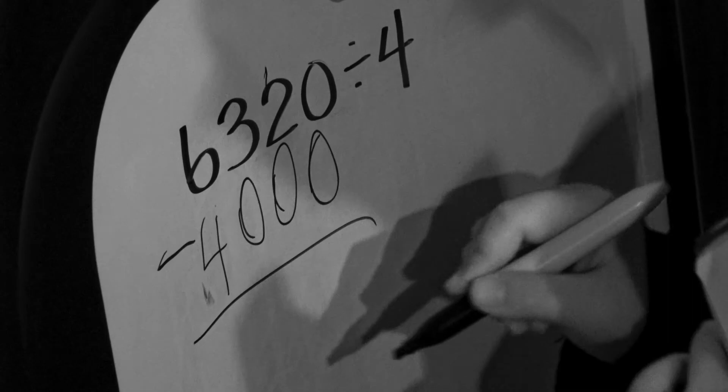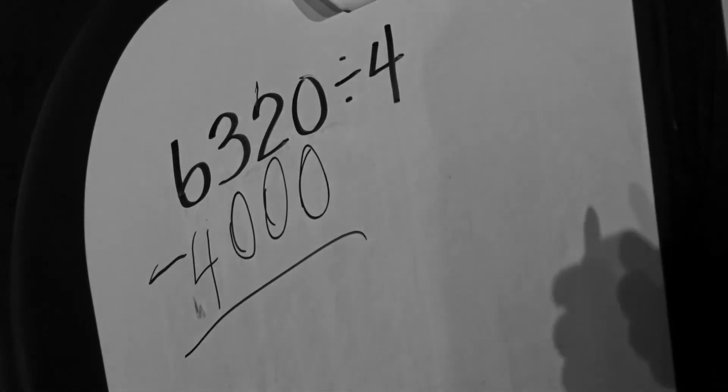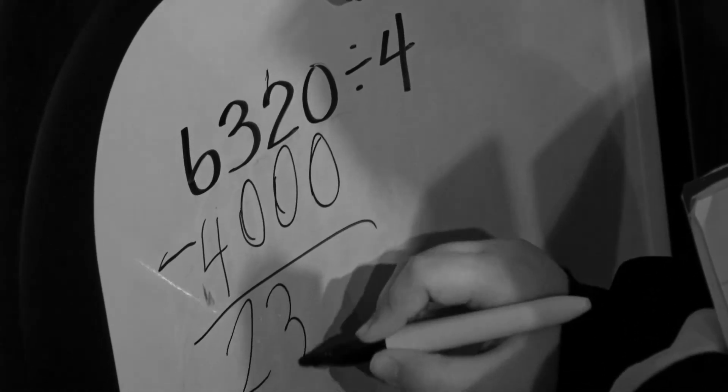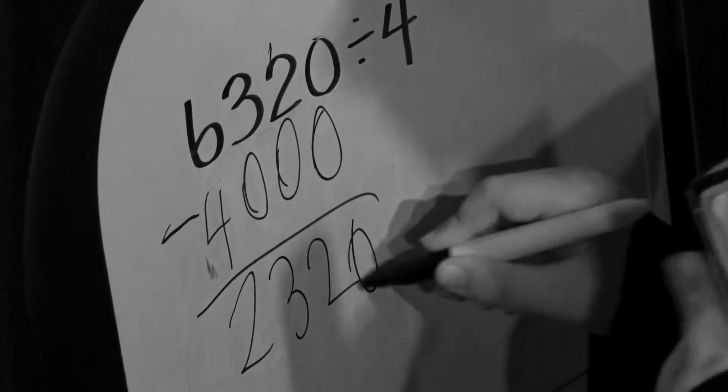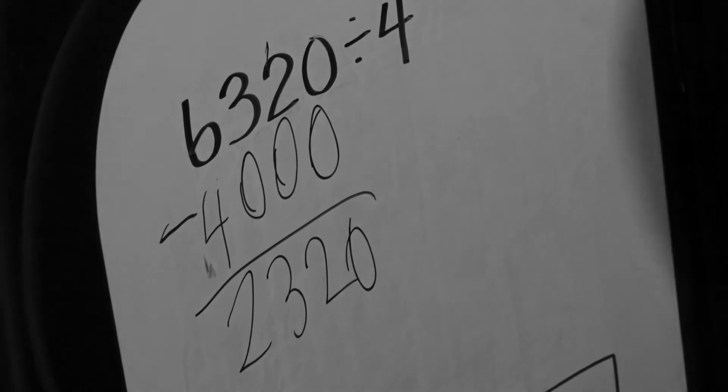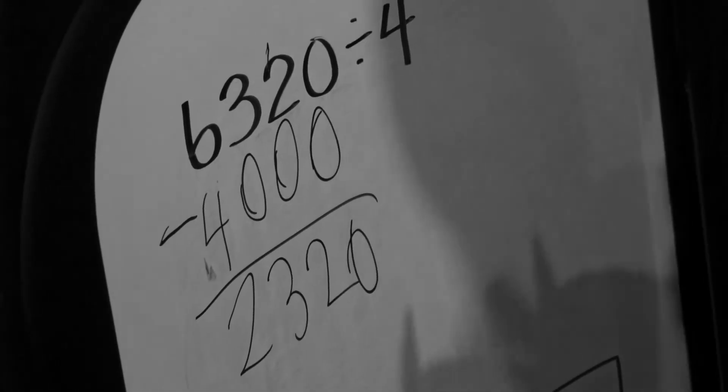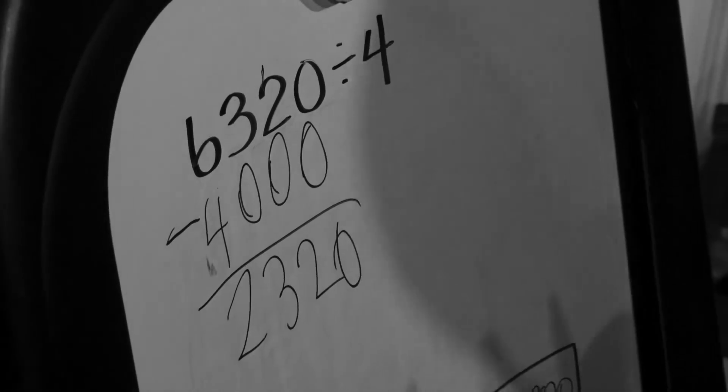So let's see, six minus four equals two, then three twenty. Okay so then two three twenty, then we need to do what could get close down.